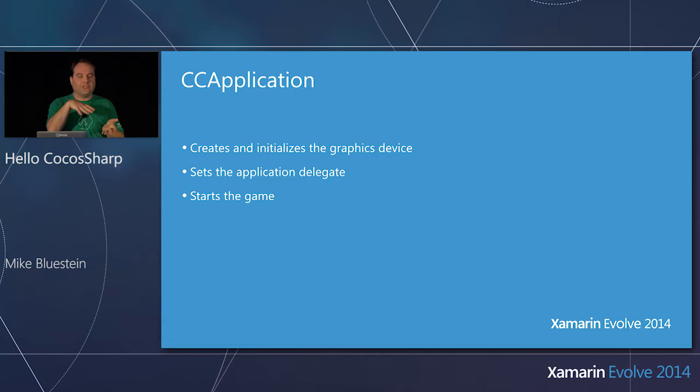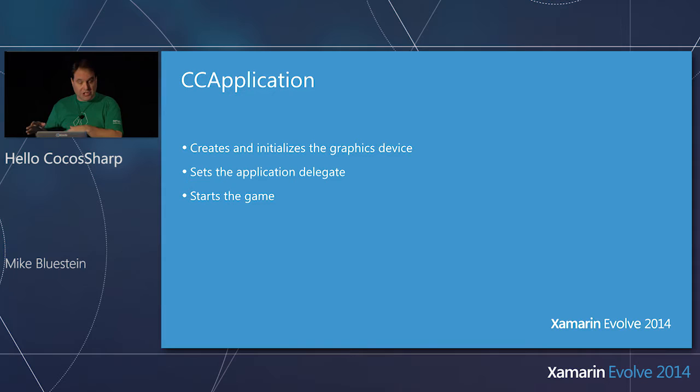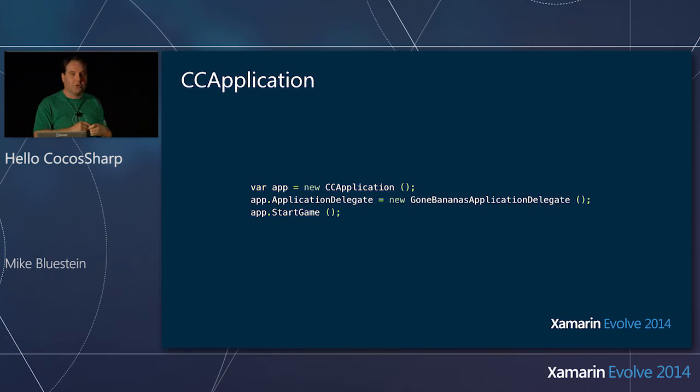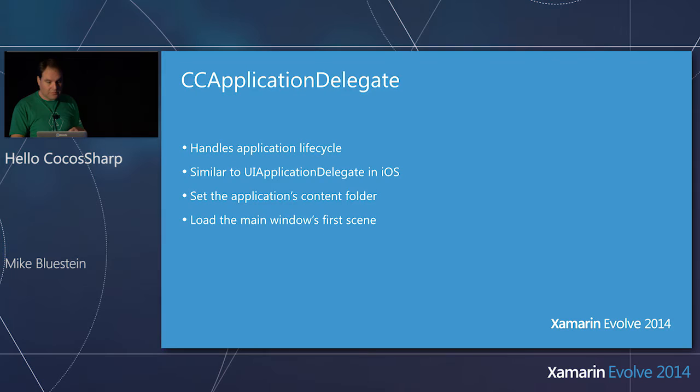Most importantly, it starts the game. You'd be working with this in a little bit of bootstrapping code in each platform-specific project — very similar code, but a little different. Then you go into the shared code. Here's the code to create a CC Application in iOS — three lines of code. You just create a CC Application, set your app delegate, and start the game. It's actually a cleaner and neater implementation than other Cocos2D implementations I've seen.